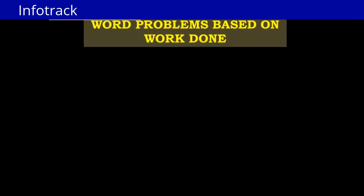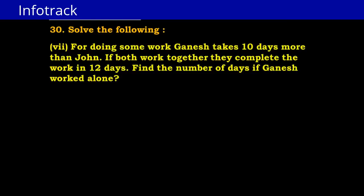Let's start with word problems based on work done. For doing some work, Ganesh takes 10 days more than John. If both work together, they complete the work in 12 days. Find the number of days if Ganesh works alone.